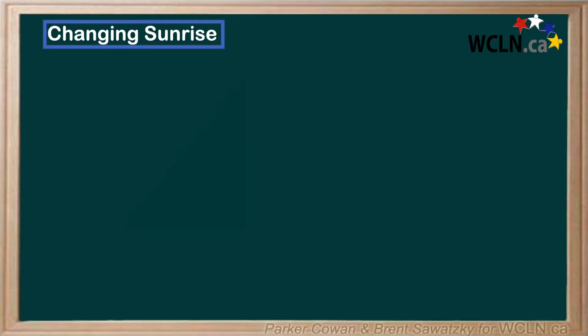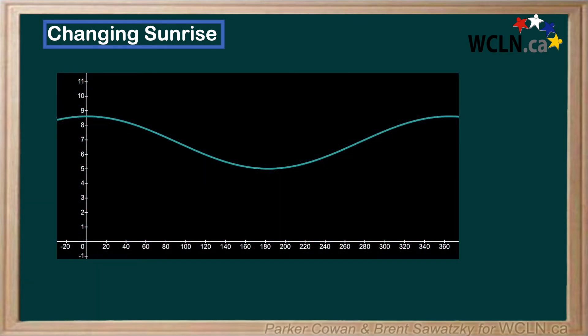Note that sometimes reading these graphs might be a bit tricky because we're given the hours in decimal form. If we want to convert to the 60-minute scale, we just need to perform a quick calculation. Say for example we were reading this graph and we wanted to know the sunrise on day 70. We would draw a line up from 70 to the curve and then across to our y-axis, and we could estimate this point to be about 7.5 hours.